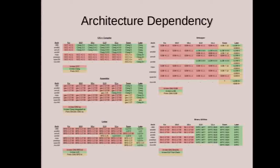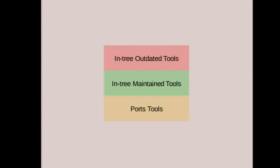We're now in a world where we have three main sources of components in the toolchain, and it's not a great place to be. But going into the future, we're looking to converge back onto one or two. The color scheme: red represents outdated GPL GNU tools in the FreeBSD tree; green represents maintained tools in the FreeBSD tree — now Clang, ELF toolchain, and similar; and yellow represents tools coming from the FreeBSD ports tree. These document the state of the world as it exists today.